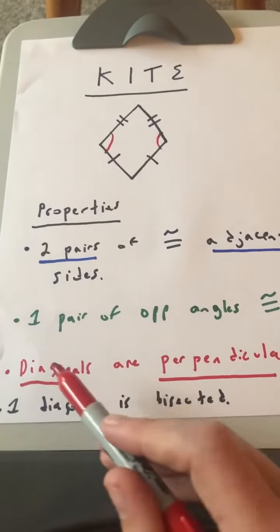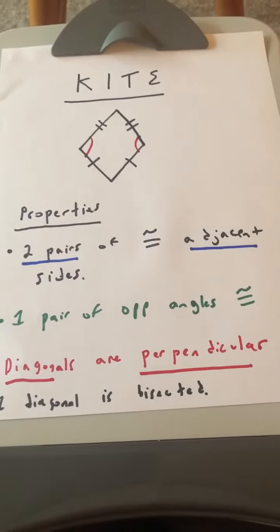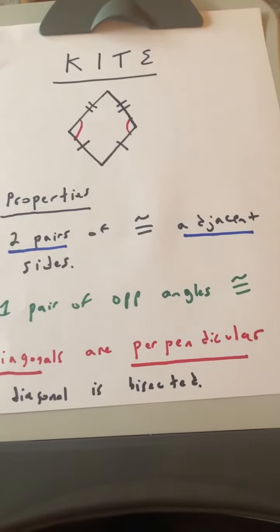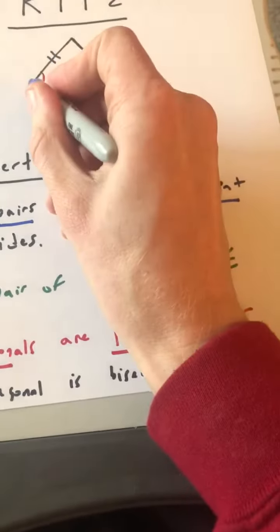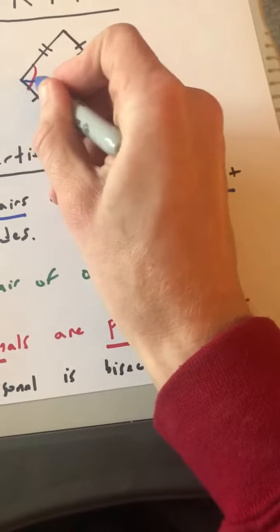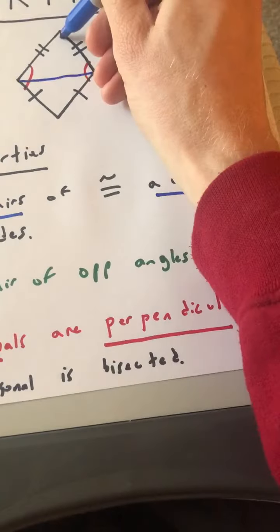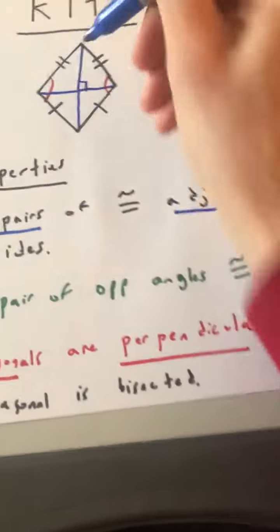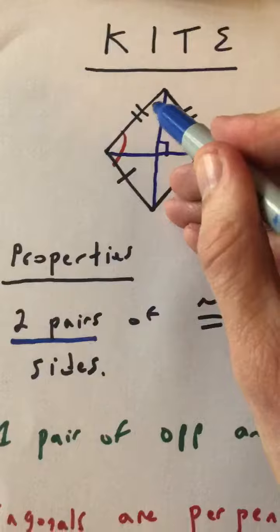The third property is that the diagonals are perpendicular. That means that they do intersect at 90 degrees. So that means that that diagonal and that diagonal intersect at 90 degrees, as you can see.